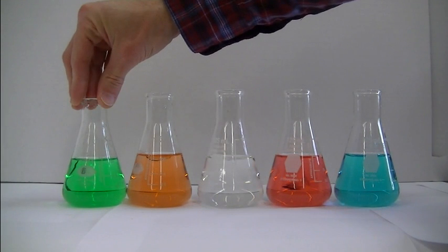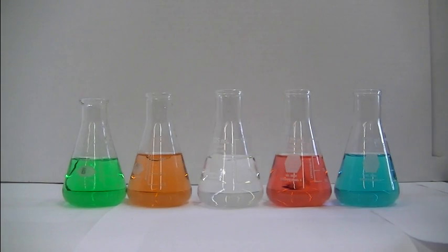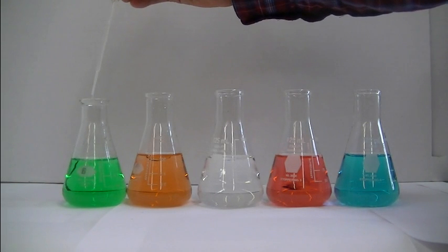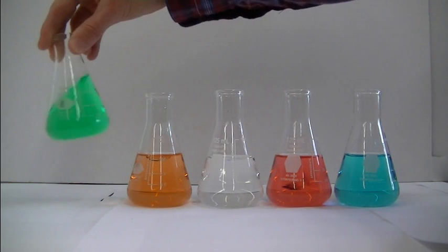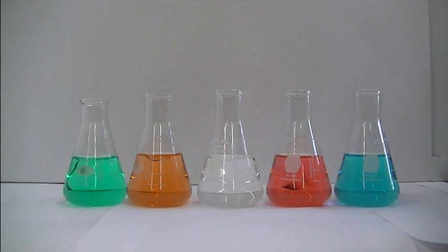So because the green dye contains yellow and blue, when I add two drops of bleach to this, the yellow dye reacts quickly, is oxidized and goes colorless, but the blue dye persists. So when you take the yellow out of green, you end up with blue.